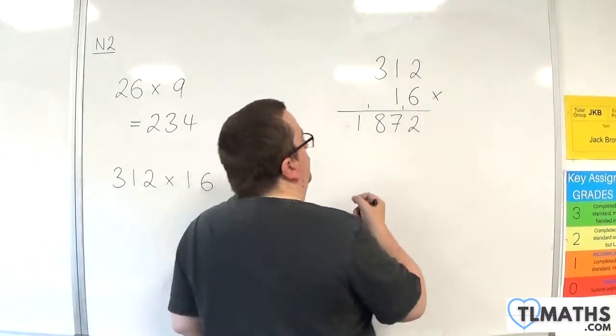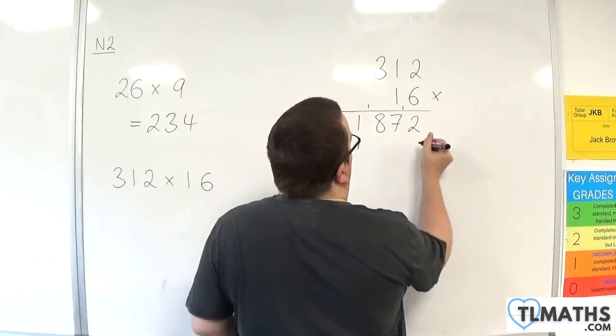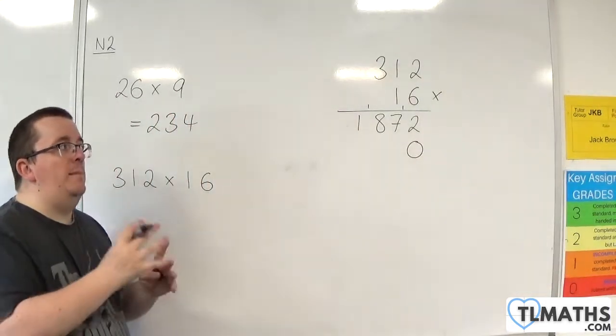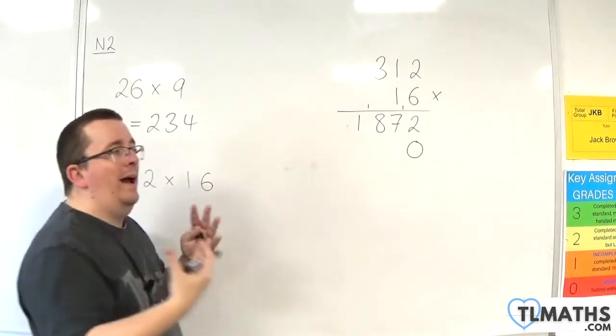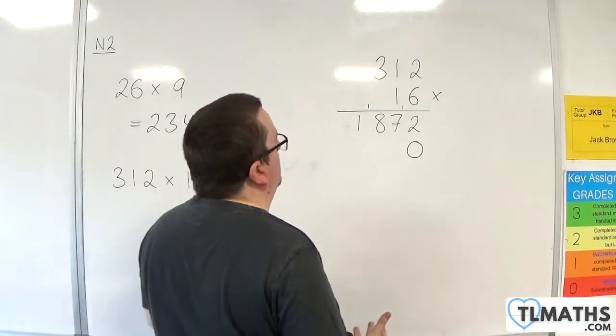So in order to get this right, to make sure everything lines up correctly, we put a 0 into the next line. Because that now means I can do 1 times each of these without having to worry about that extra 10 that I'm multiplying by.